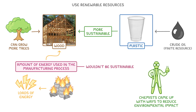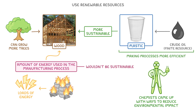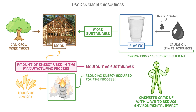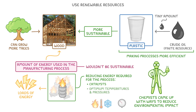Luckily, chemists have come up with ways to reduce the environmental impact of manufacturing things, either by making processes more efficient, like only needing a tiny amount of oil to make a whole plastic cup, or by reducing the energy required for the process, which they can do by using catalysts and making sure we use the optimum temperatures and pressures.